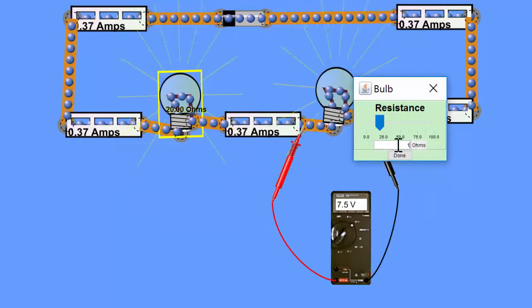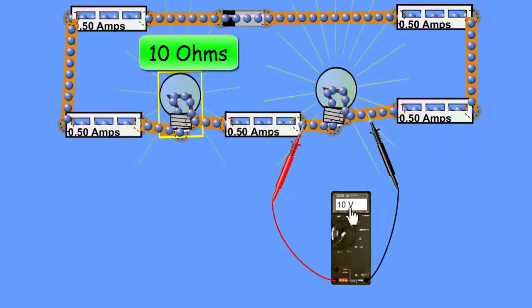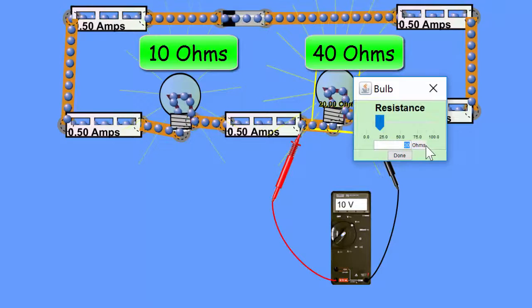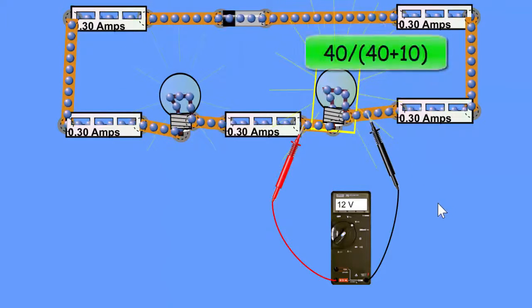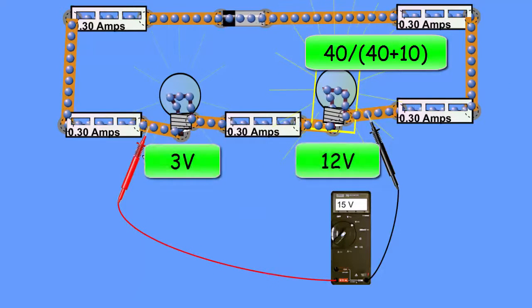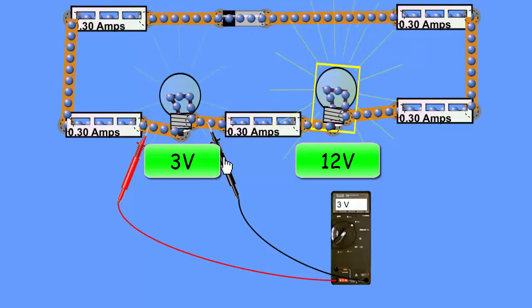Setting the resistor on the left back to 10 and this resistor now to 40 ohms, I can now say that this is 40 out of 50 ohms and 40 out of 50 is 80%. So I get 80% of the voltage on bulb number 2 and 20% on bulb number 1.